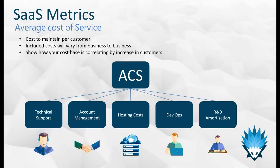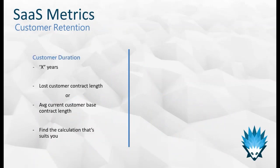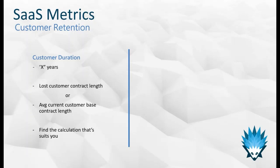The next metric is customer retention, usually starting with duration: when you win a customer, how many years are they going to be a loyal customer? It's a difficult question, and there are two main ways to approach it. You can look at your lost customers and see on average how long they were with you — if you have high churn, you have a large sample to draw from. If you have low churn, you might only be basing this on a couple of customers. You can also take your current customer base and work out the average customer tenure.